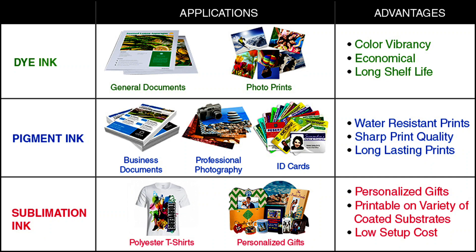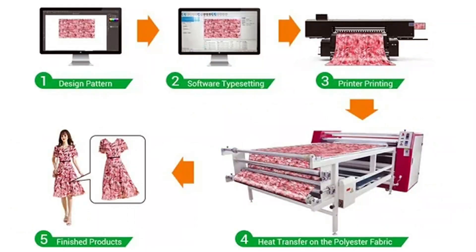Sublimation ink is a specialized type of ink that is used for dye sublimation printing. It is a dye-based ink that is designed to transfer onto specially coated substrates, such as polyester fabric or coated ceramics. Sublimation ink is unique in that it can change from a solid to a gas without going through a liquid phase, a process known as sublimation.